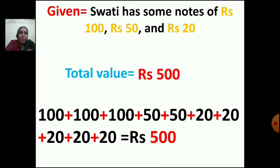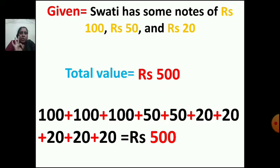Swati has taken 100 rupees, 50 rupees, and 20 rupees. Let us count: 100 plus 100 plus 100 plus 50 plus 50 plus 20 plus 20 plus 20 plus 20 plus 20 is equal to rupees 500. It means she has taken 3 notes of rupees 100, making 300 rupees, and 2 notes of 50 rupees, making 100 rupees. So 300 plus 100 is 400.